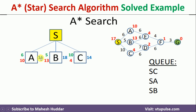For the path S to A: the edge cost is 6 and the heuristic value of A to G is 10, so 6 + 10 = 16. For S to B: 5 + 13 = 18. For S to C: 10 + 4 = 14. In the queue, we arrange these in order — C is minimum at 14, next is A at 16, then B at 18.